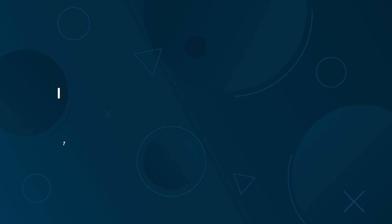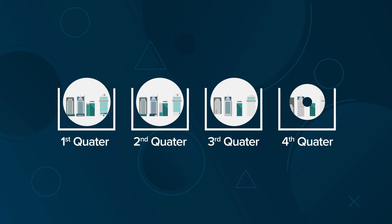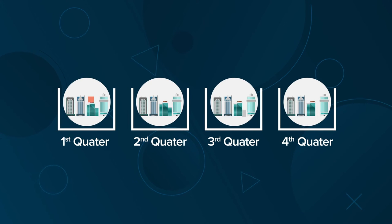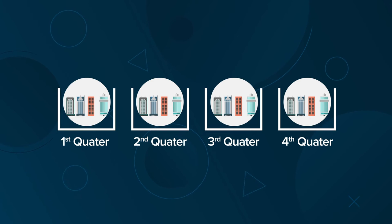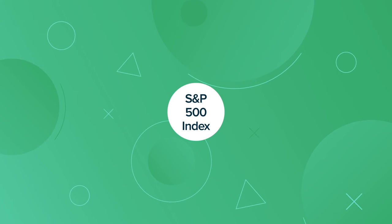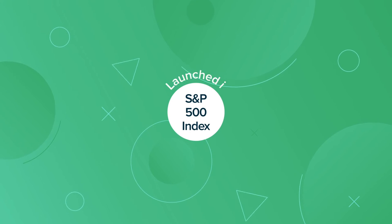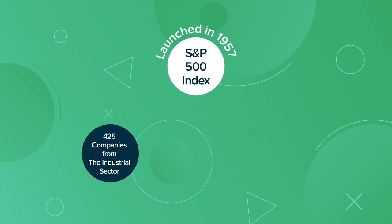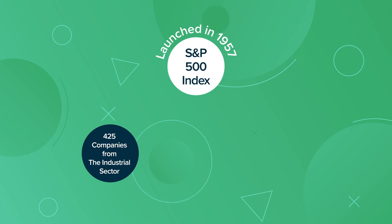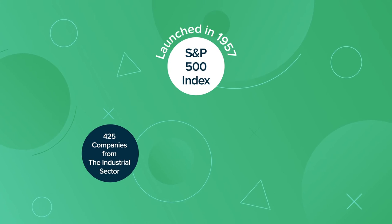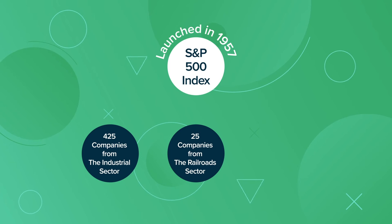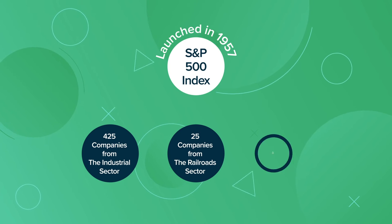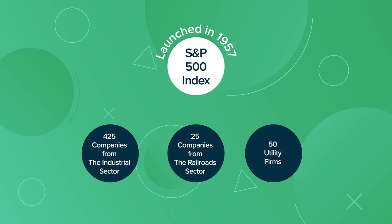The index's composition is reviewed each quarter, and new companies are added to it or previous ones are removed from it. The S&P 500 index was launched in 1957 and had 425 companies from the industrial sector, 25 companies from the railroad sector, and 50 utility firms.